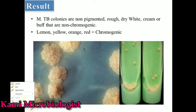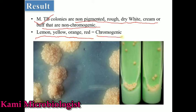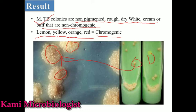Regarding the results: Mycobacterium tuberculosis produces non-pigmented, rough, dry, white creamy or buff-colored non-chromogenic colonies. Other Mycobacterium species show lemon yellow, red, or orange chromogenic colonies. As you can see, these are the white creamy rough colonies. The green color visible in the zoomed image represents the malachite green, confirming that other bacteria are inhibited and only Mycobacterium tuberculosis can grow. That is all about the LJ media.